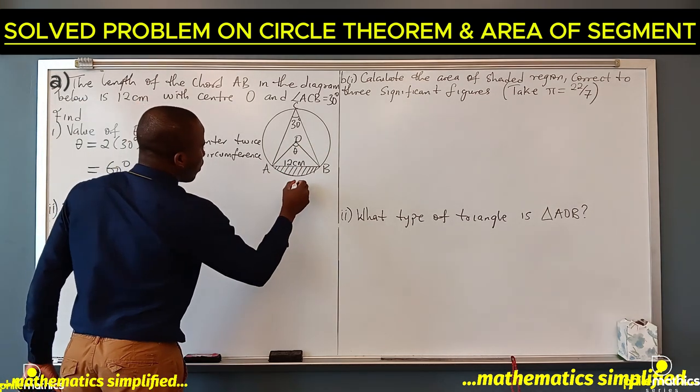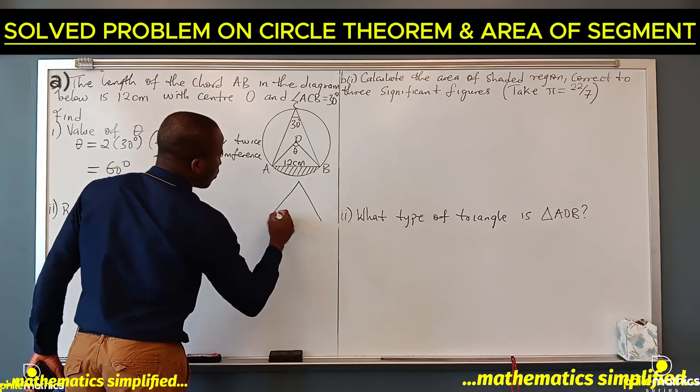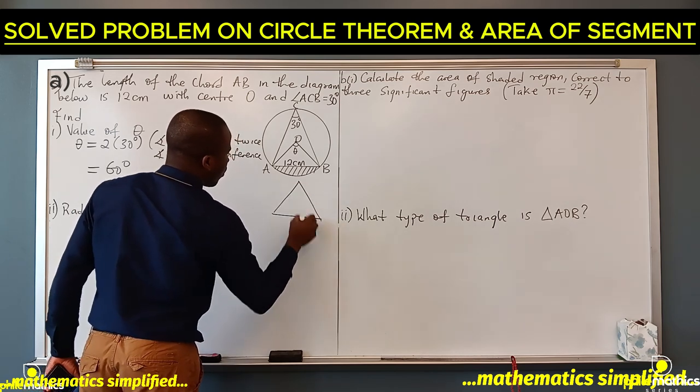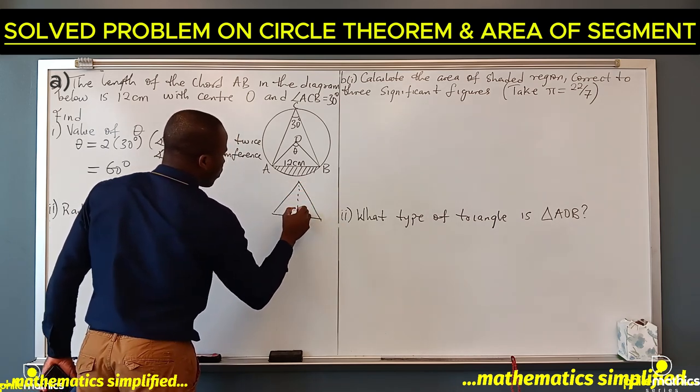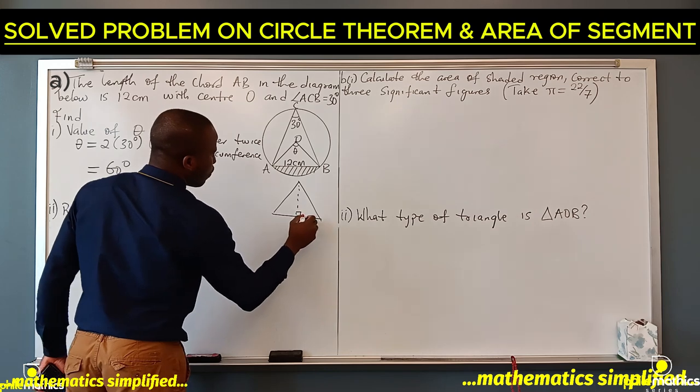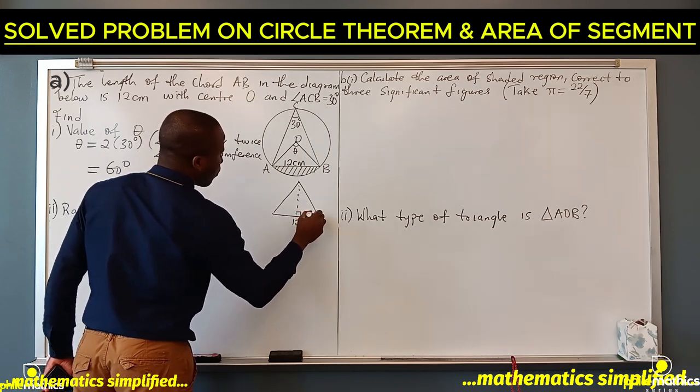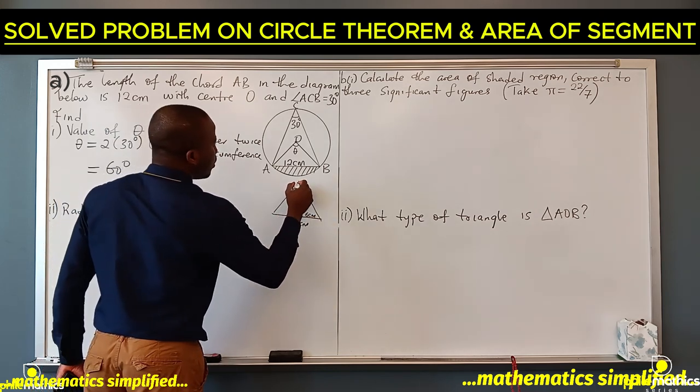To find the radius of the circle, we are going to draw a perpendicular. This is 12 cm. So since here is 12 cm, here is 6 cm.